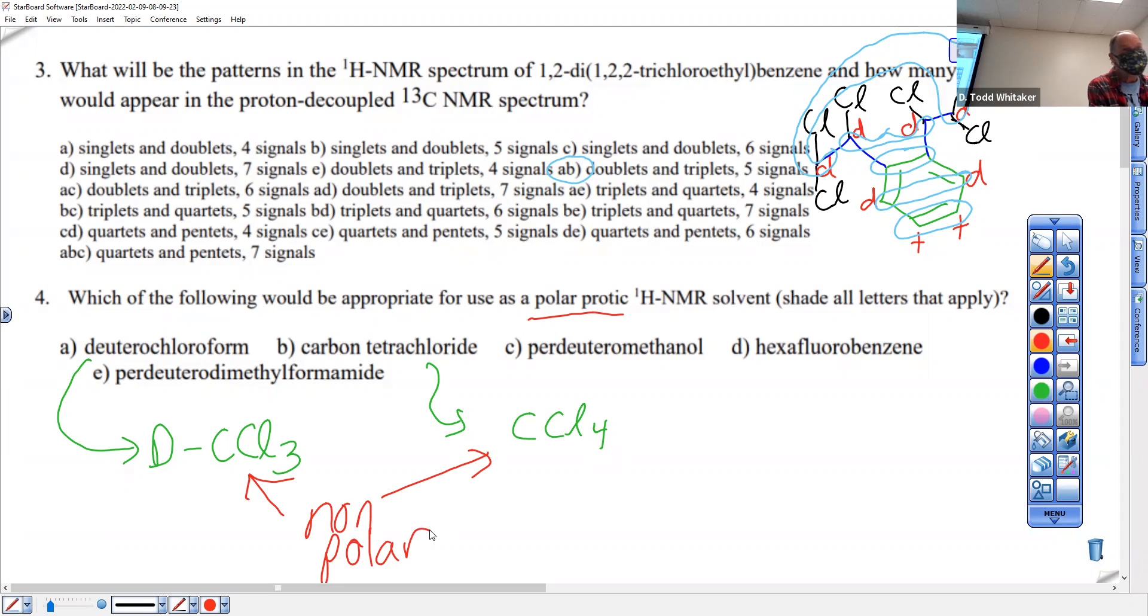Per-deuteromethanol. Per-deutero, if you forgot or maybe didn't know, per just means every hydrogen's been replaced with. Okay? Now what is the width? Well in this case it says the width is deutero. Okay? So draw methanol but every time you want to put an H, put a D. We have a winner. We're very happy about that because a polar protic solvent is alcohols or amines. Okay? Not any amines, primary or secondary. They have to have H's on the N. Okay, so so far that's the only one.